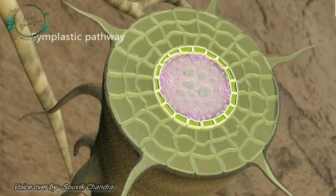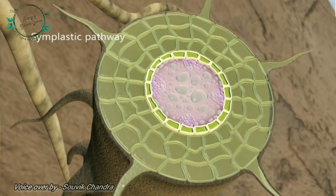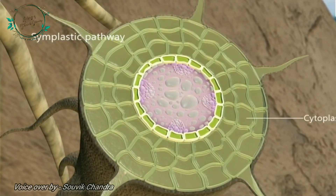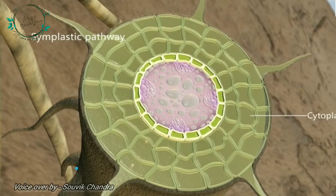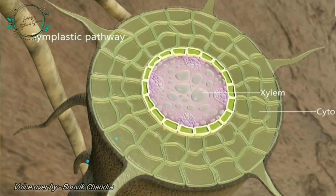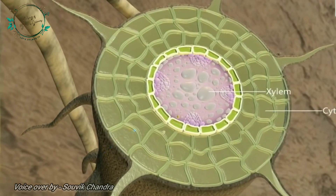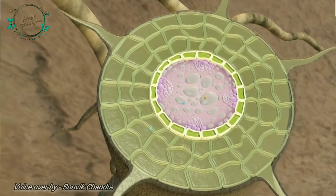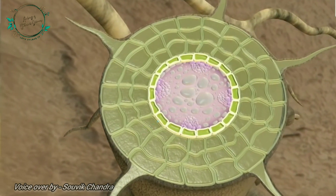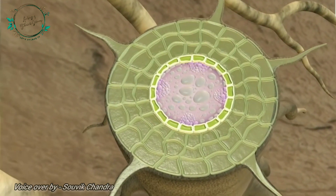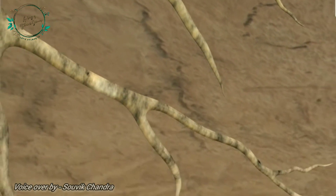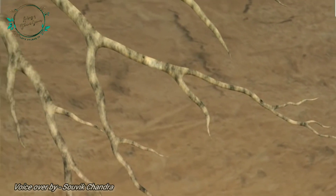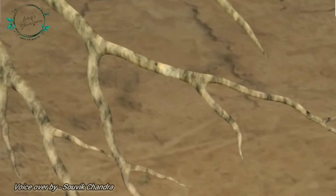In the symplastic pathway, the water and minerals move across the cytoplasm via plasmodesmata and finally reach the xylem. And when it crosses membrane to membrane, it is called the transmembrane pathway.